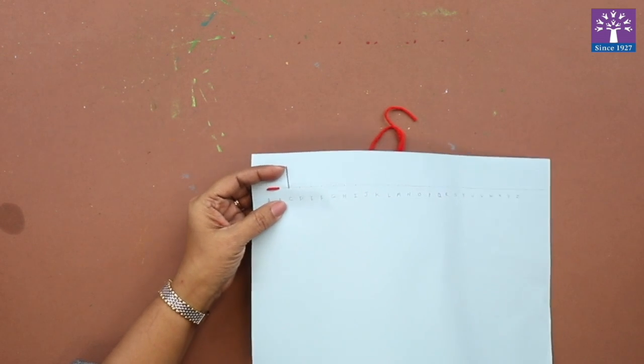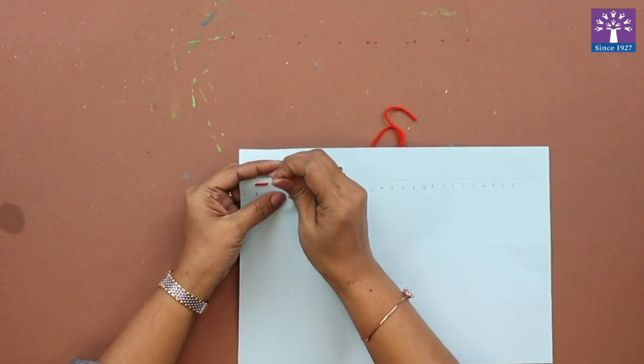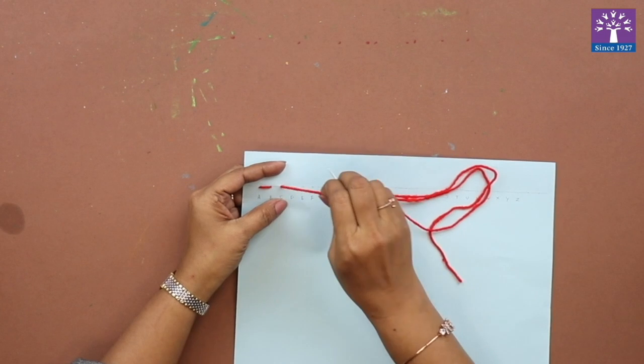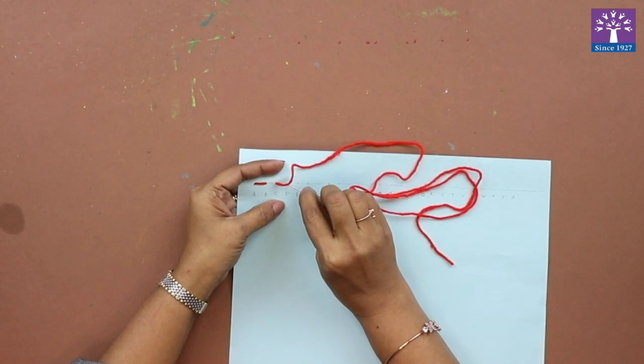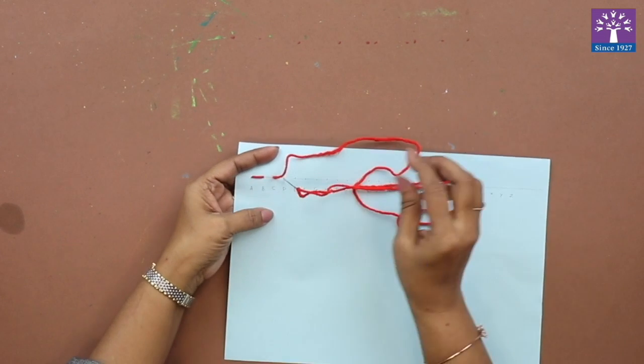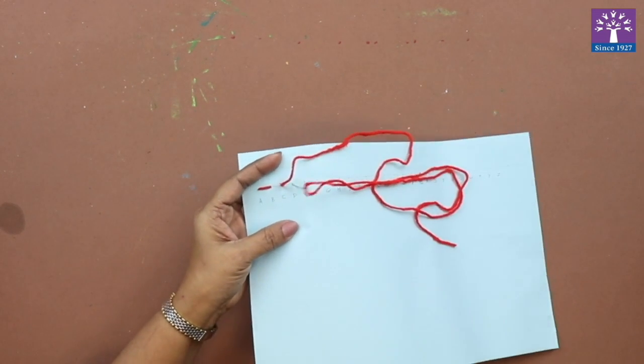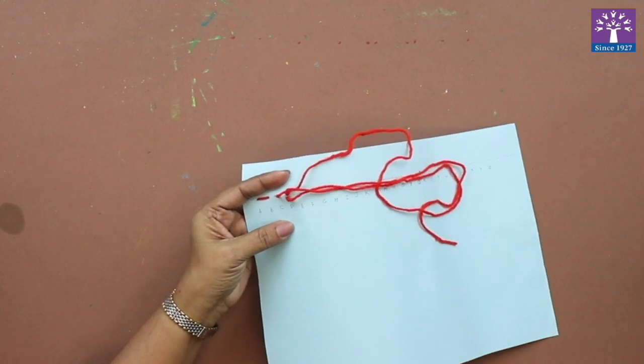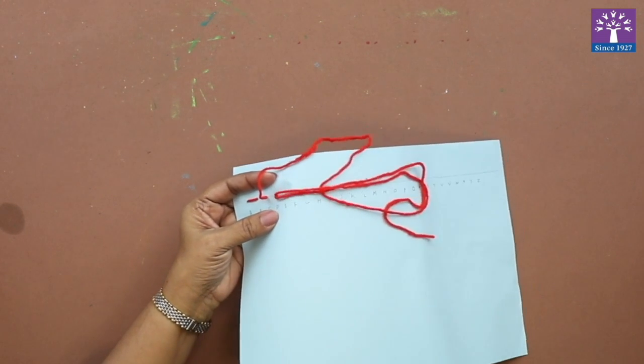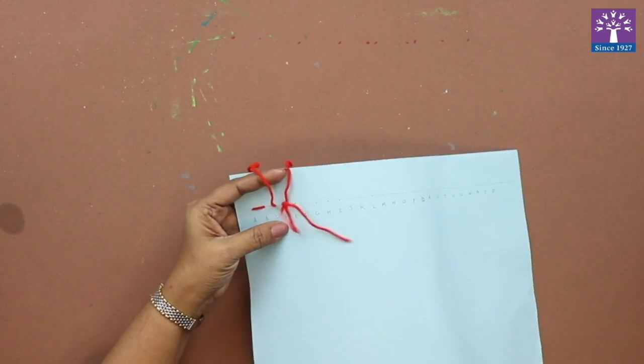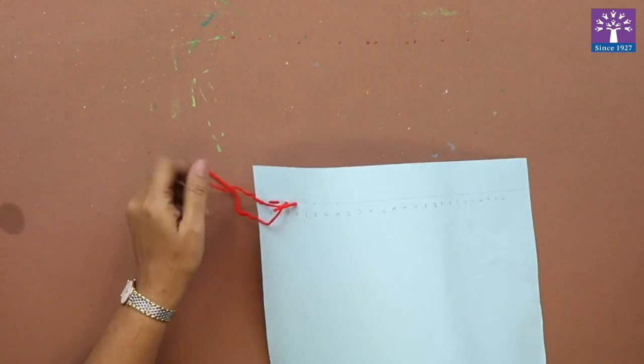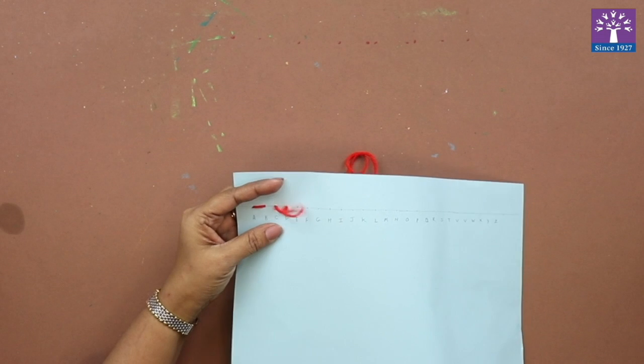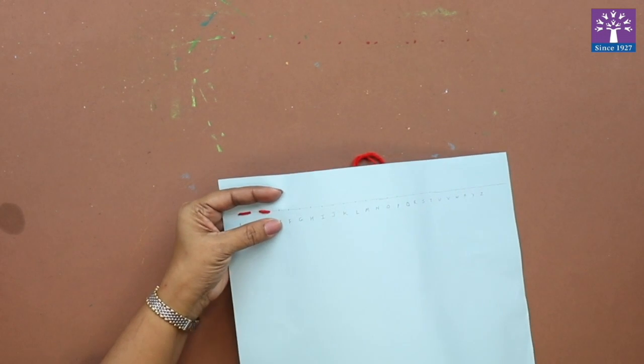So from here you are going to see on point C. Pull the woolen thread. Again we will put it on point D. So this is like once up, once down stitch. One from the front side and once you will put the needle from the reverse side of the paper.